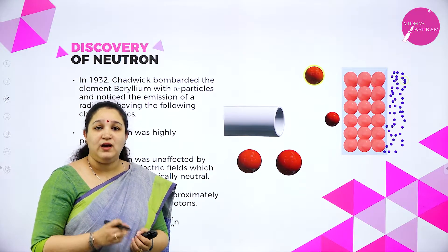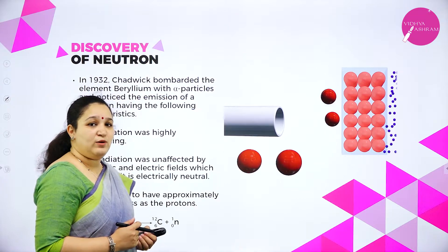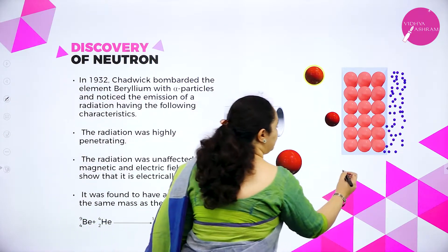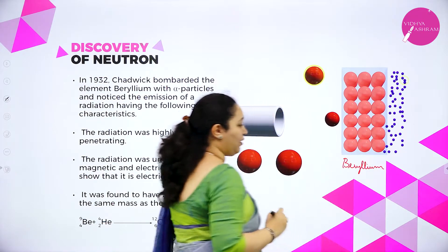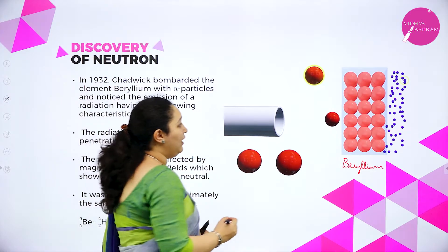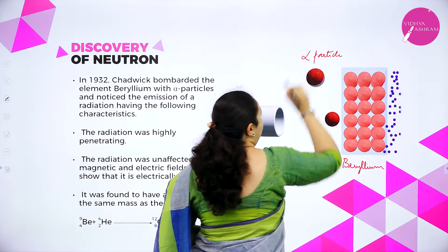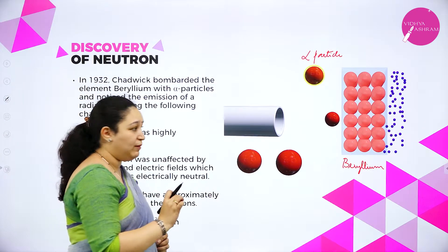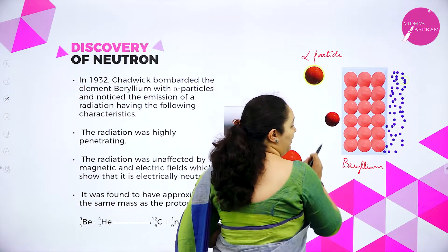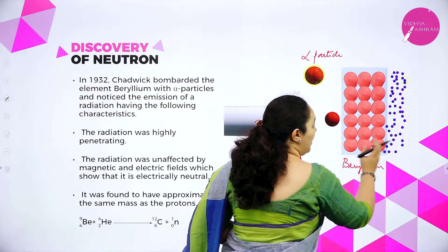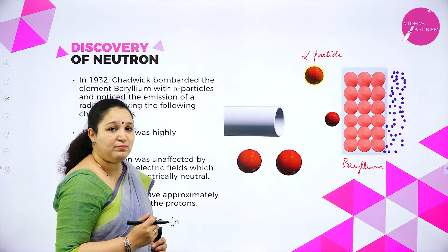James Chadwick in 1932 confirmed the presence of neutrons. James Chadwick bombarded the beryllium element with alpha particles. High speed alpha particles were bombarded on a thin sheet of beryllium, and we can observe that some particles are emitted from the beryllium element — and those are nothing but neutrons.